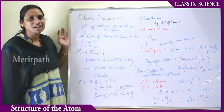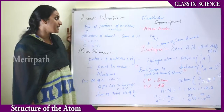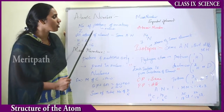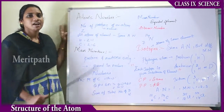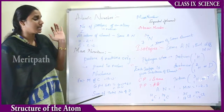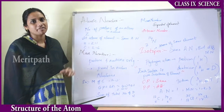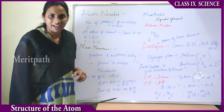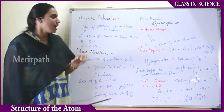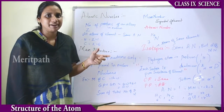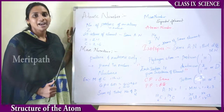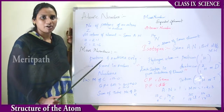Let us see the atomic number and mass number of elements. The atomic number is defined as the number of protons of an atom. Protons are embedded inside the nucleus, and therefore the number of protons present in the nucleus of an atom defines the atomic number of an element. Every atom of a particular element will have the same atomic number, which is defined as the number of protons.